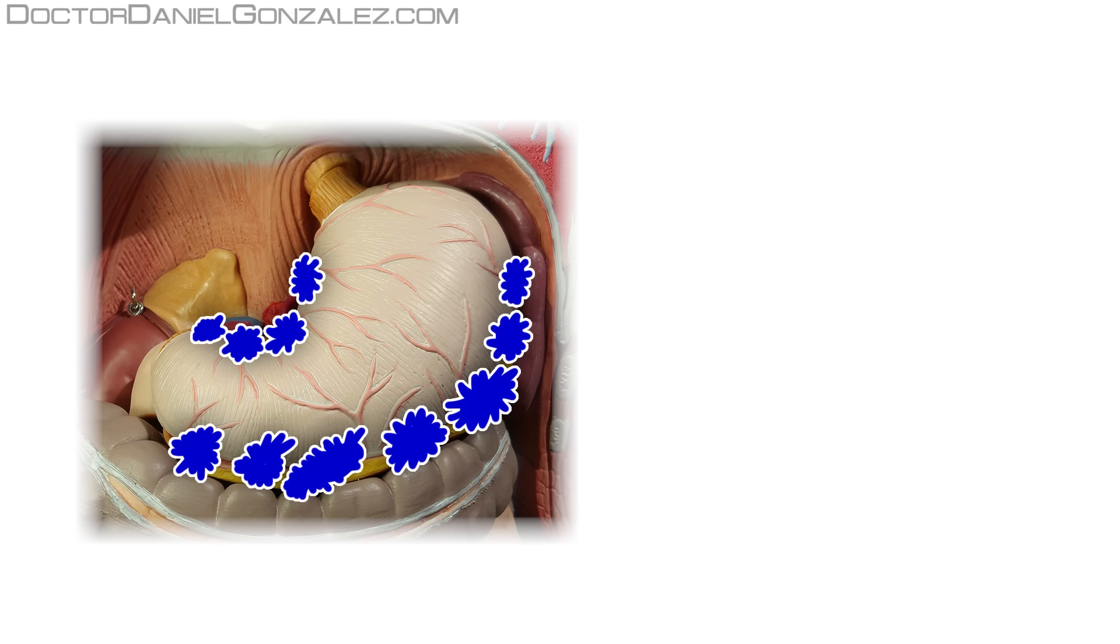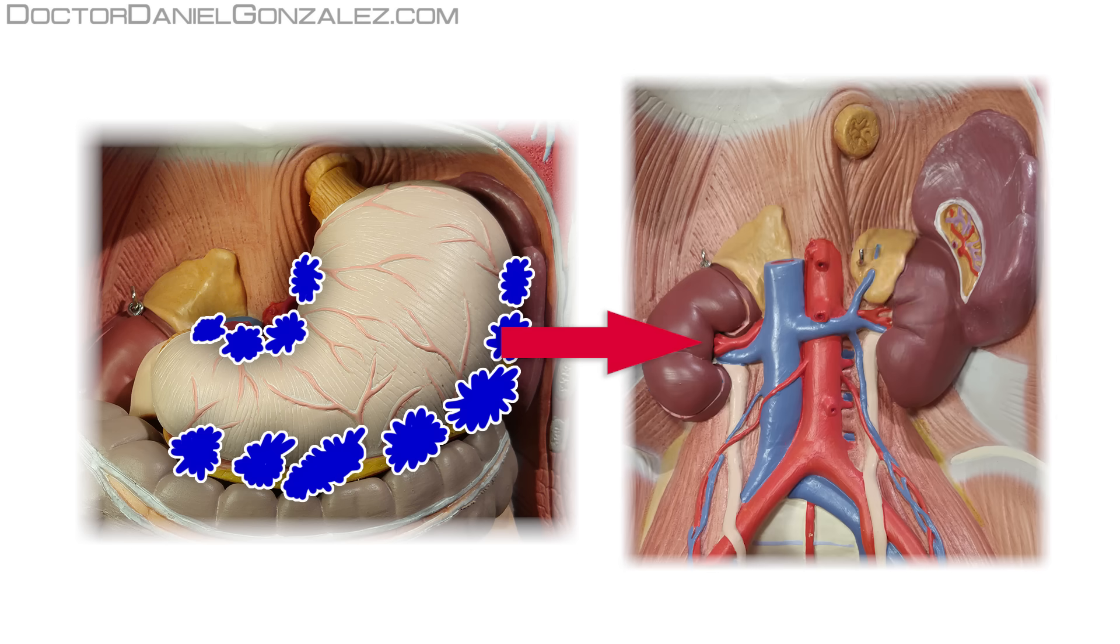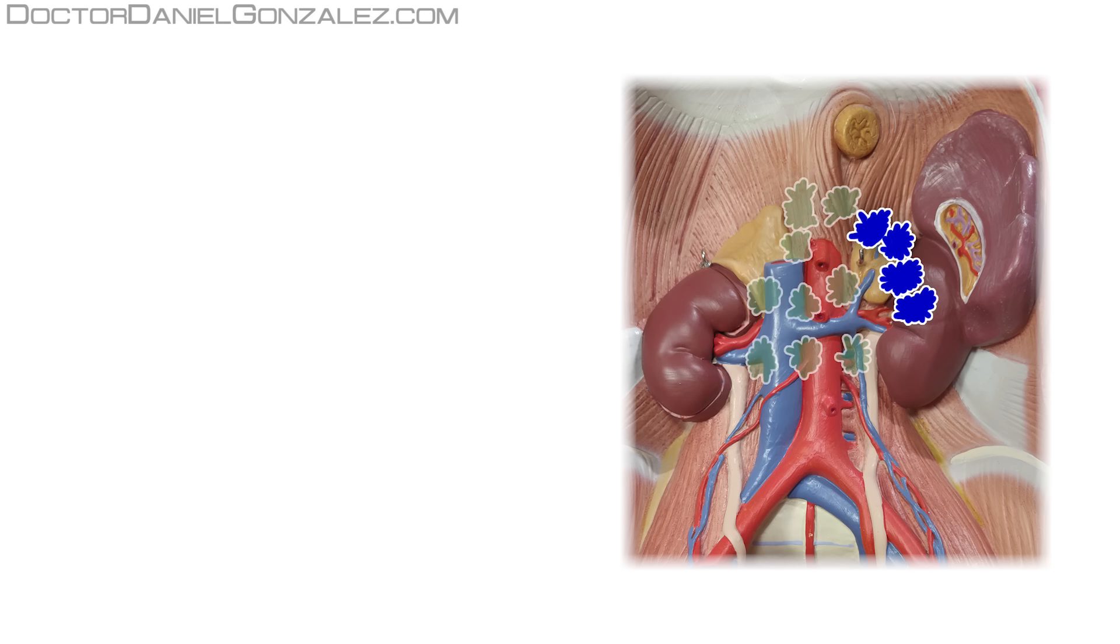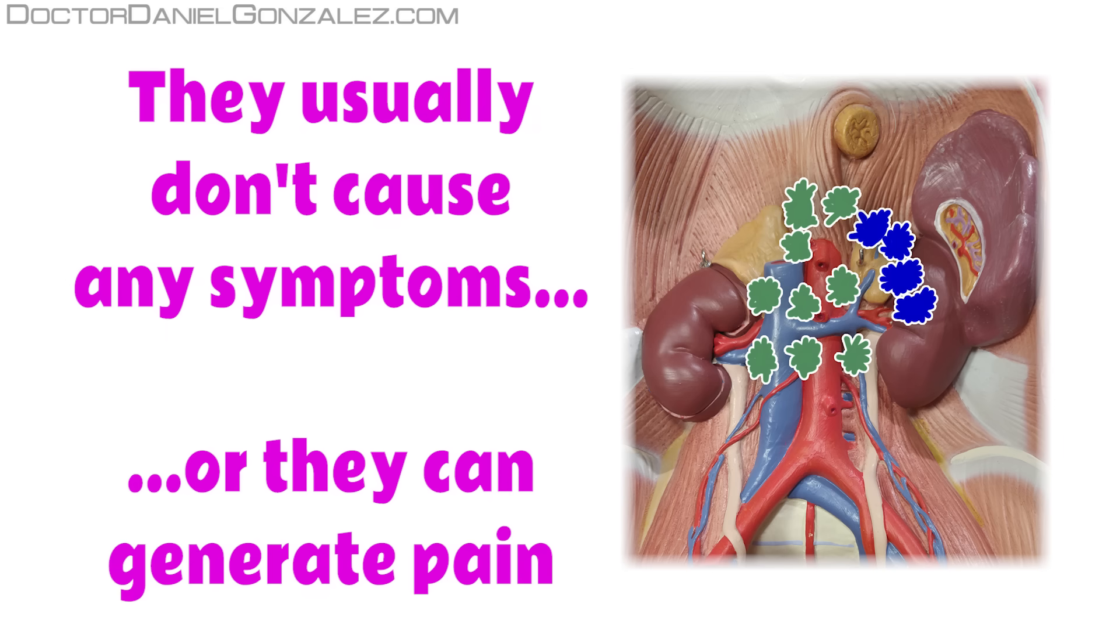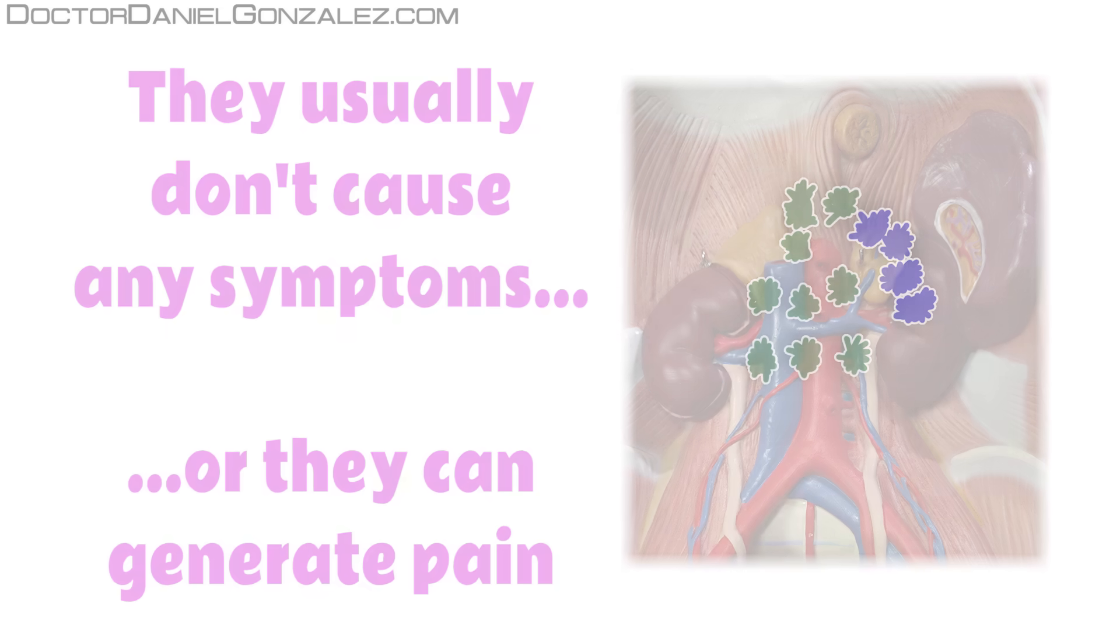From lymph nodes close to the stomach, tumor cells can spread to more distant lymph regions, like the one situated behind the pancreas and peritoneum and the region of the sheath of the aorta. If they are located in this area, most often they do not cause symptoms, but seldom they can cause pain from compression of neighboring structures, such as the celiac plexus.